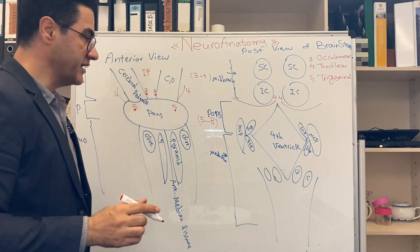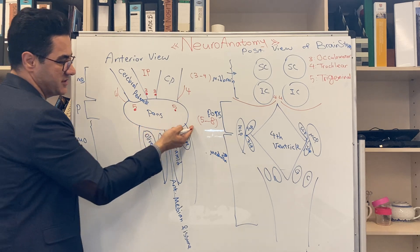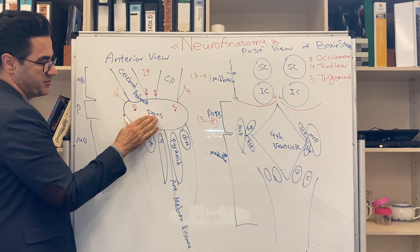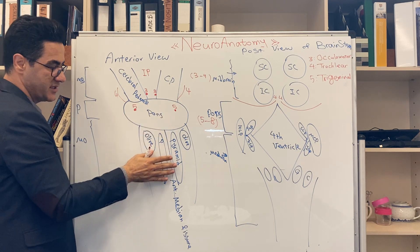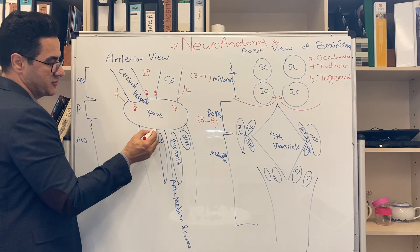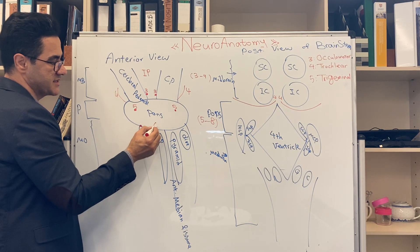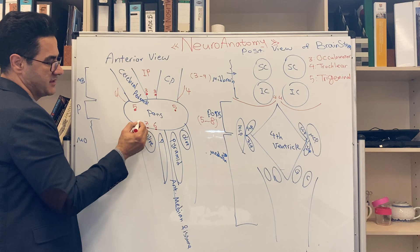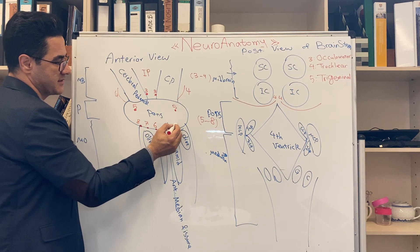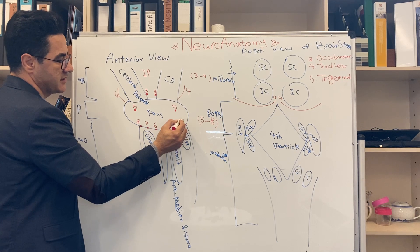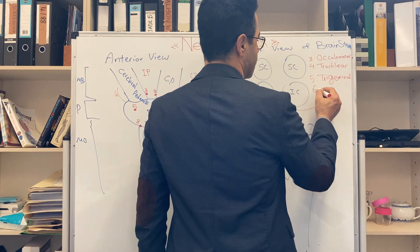Cranial nerves 6, 7, and 8 come out of the junction between the pons and medulla, called the pontomedullary junction. From medial to lateral we have cranial nerves 6, 7, and 8 on each side.